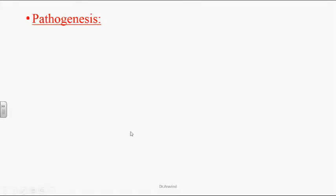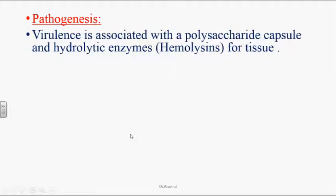Pathogenesis mainly occurs because of the polysaccharide capsule — especially the third serotype — and hydrolytic enzymes like hemolysins, which can damage tissues. These are the two prominent virulence factors leading to infection in humans.